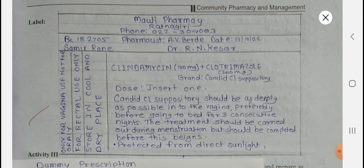The direction reads: insert one Candid CL suppository as deeply as possible into the vagina, preferably before going to bed, for three consecutive nights. Treatment should be carried out during menstruation but completed before it begins. Auxiliary labels include: 'Protect from direct sunlight,' 'For vaginal use only — not for oral use,' and 'Store in a cool and dry place.'